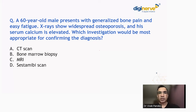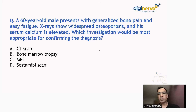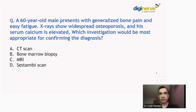This is the first question. Now, this is a controversial question because it is not very straightforward. A 60-year-old male presents with generalized bone pain and easy fatigue. So you start getting the clues right from the beginning. X-ray shows widespread osteoporosis and his serum calcium is elevated. Which investigation would be most appropriate for confirming the diagnosis?